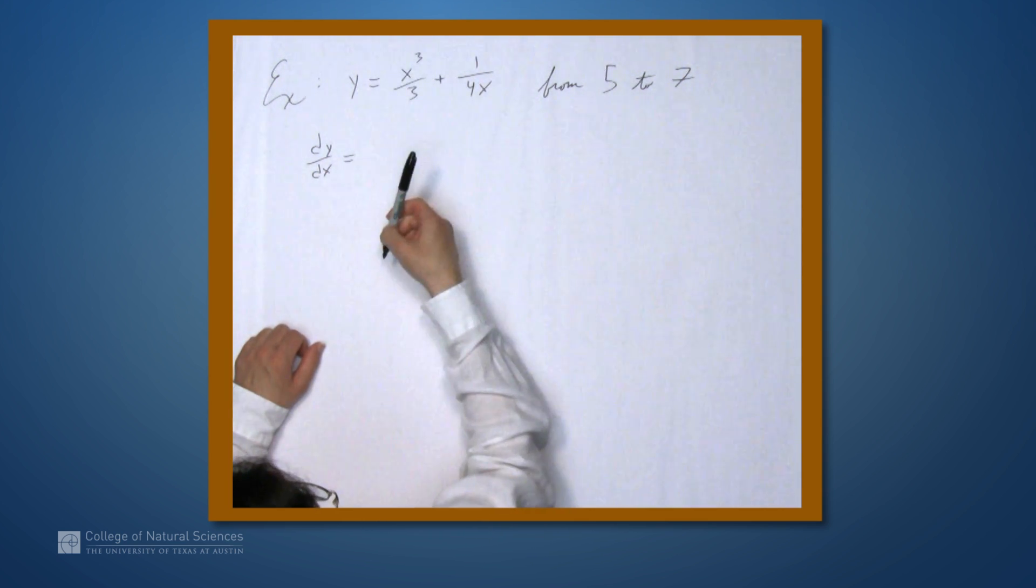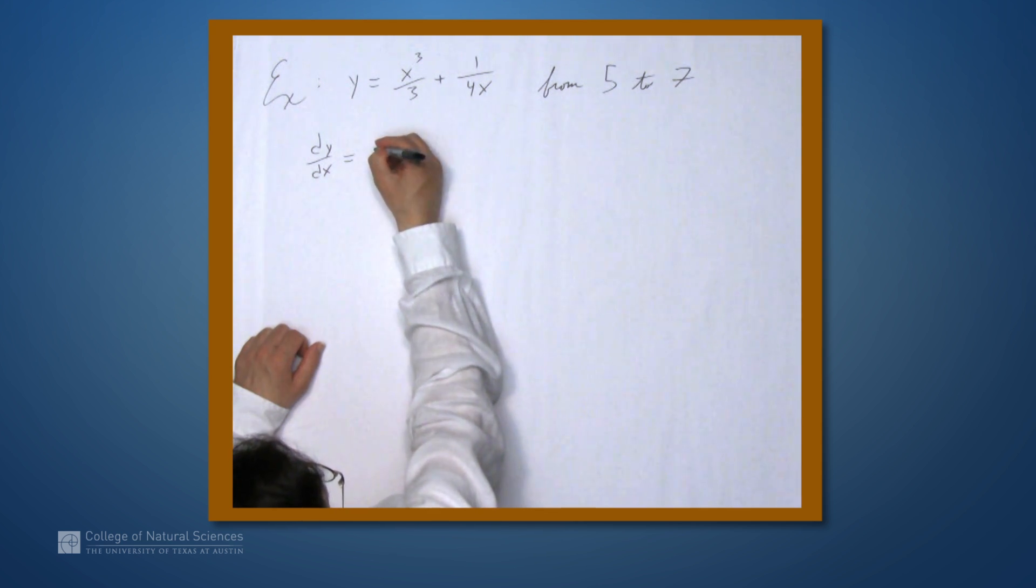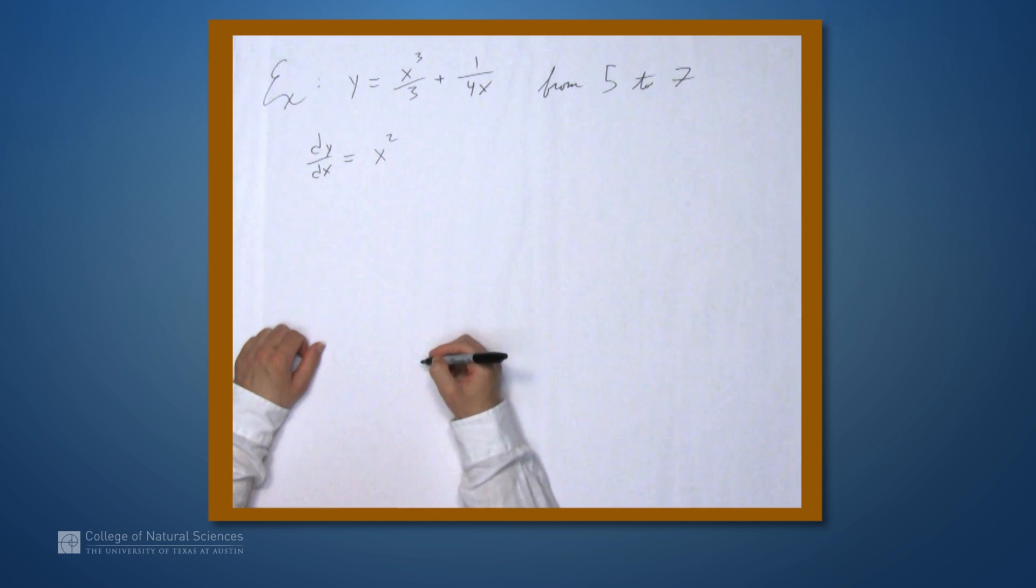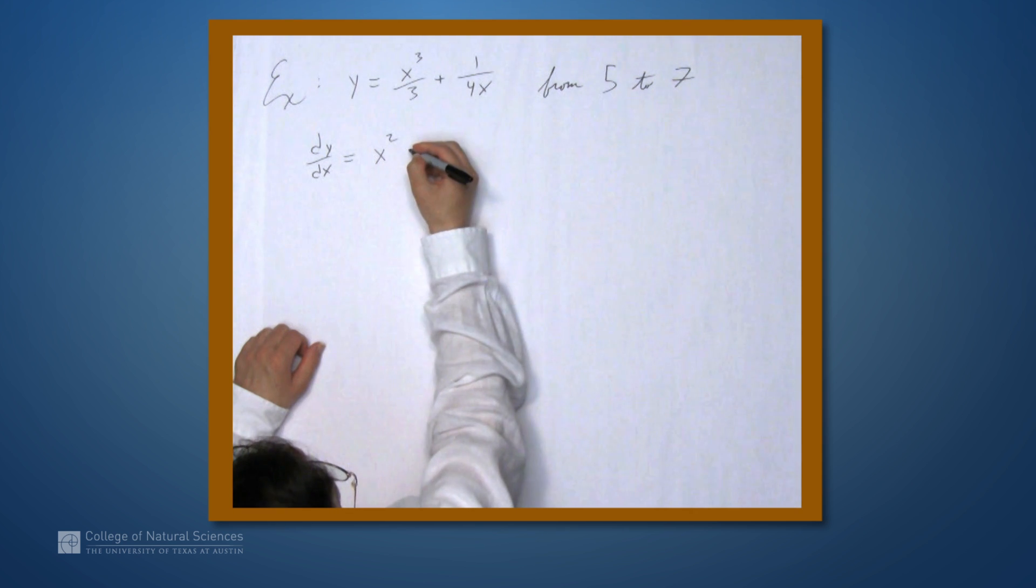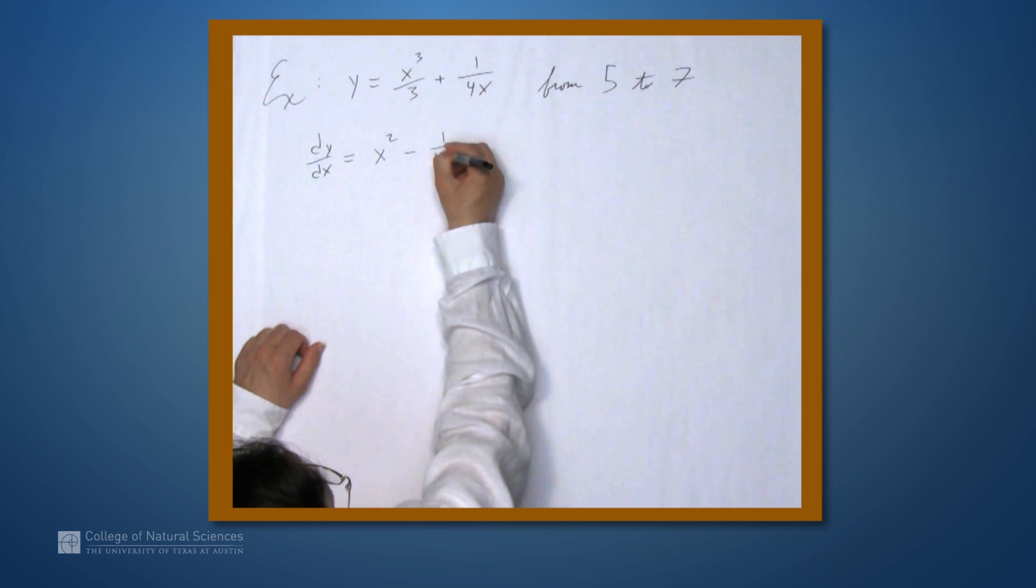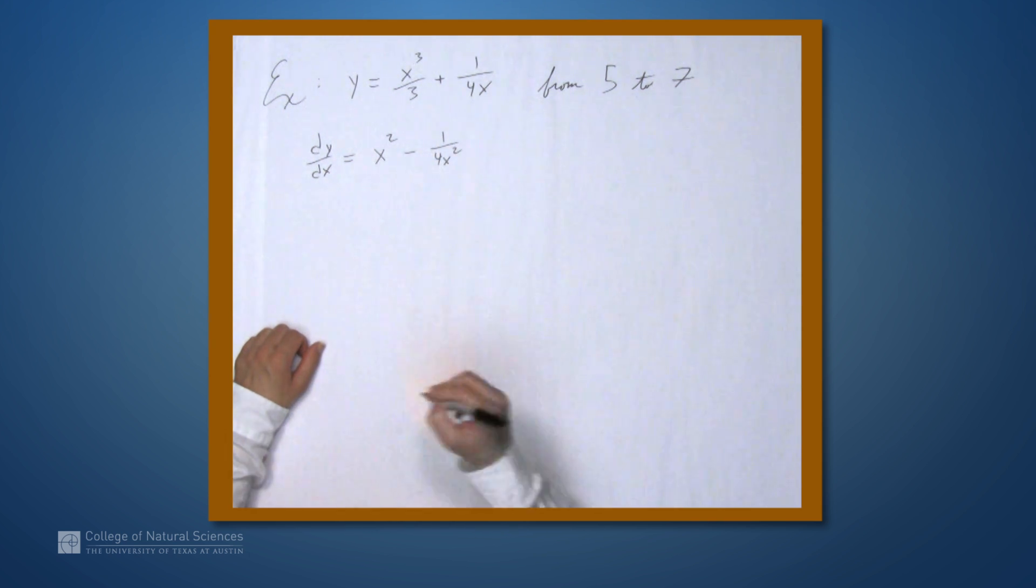Well, the derivative of this x cubed over 3 is simply x squared, and the derivative of 1 over 4x is negative 1 over 4x squared.